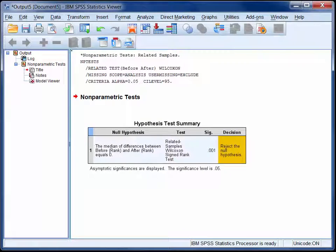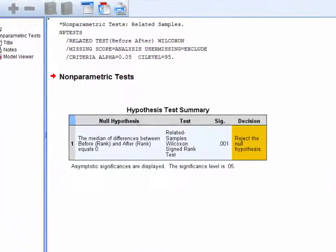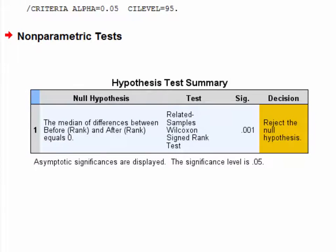So when you run a Wilcoxon signed rank test in SPSS, the default display is quite minimal. However, it can be expanded to provide more detail.